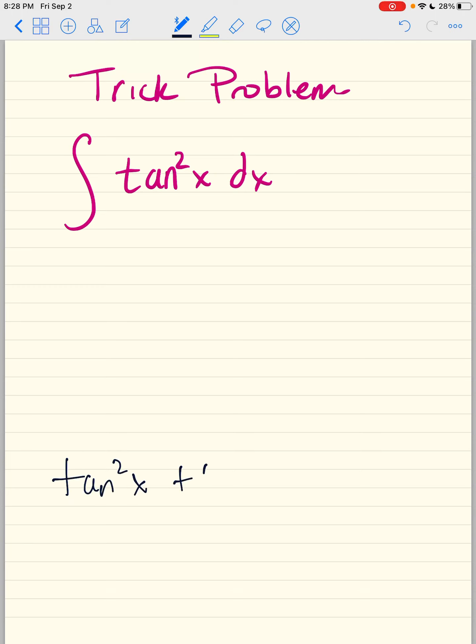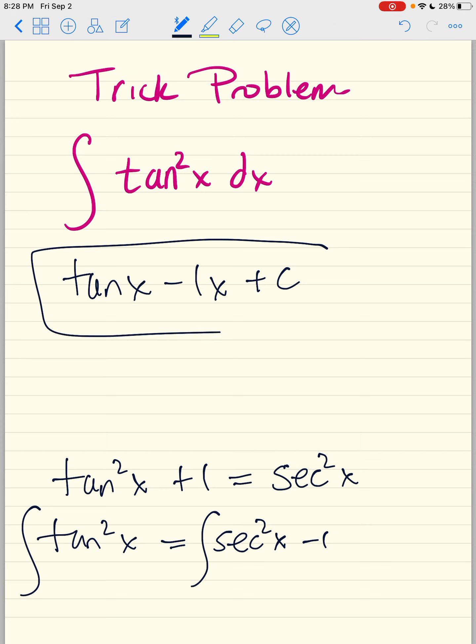Sine squared plus cosine squared makes 1. Tan squared plus 1 equals secant squared. So this will always be on your exams. You exchange that and then you integrate. Who gives you secant squared? Tan. You look at the right side. Who gives you negative 1? Negative 1x. So this was a trig problem.